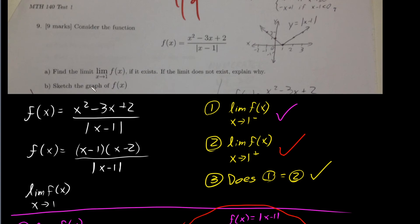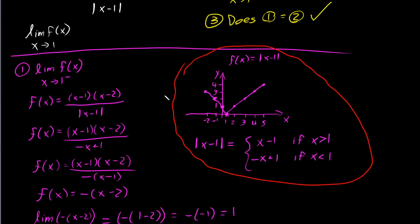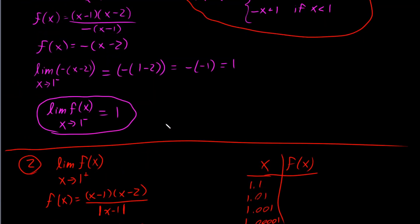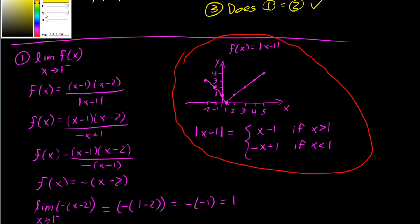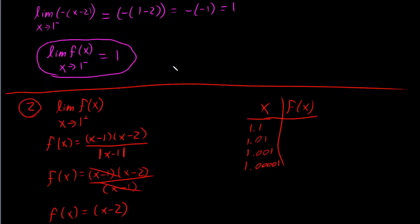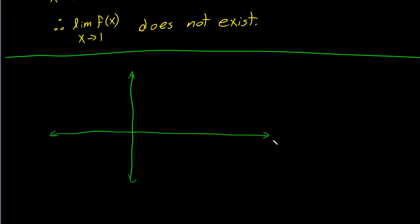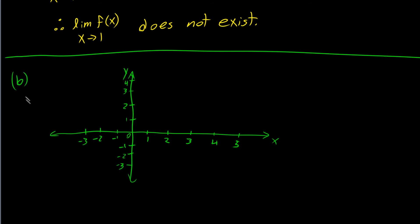Now let's solve part B, which asks us to sketch the graph of f(x). This is going to be easy because we've already partially solved this. We found the piecewise form of the function: when x is greater than 1, the function simplifies to x−2; and when x is less than 1, it simplifies to −x+2. Let's set up axes and plot some values.